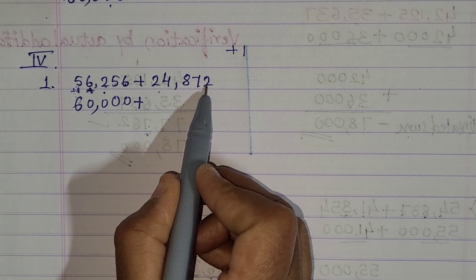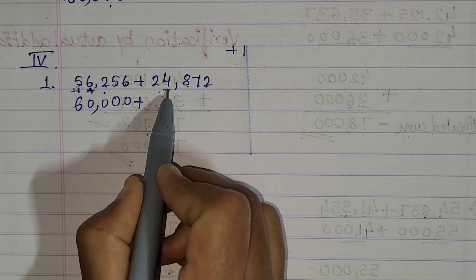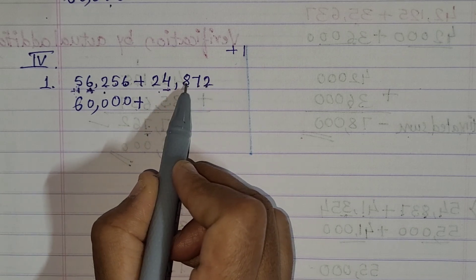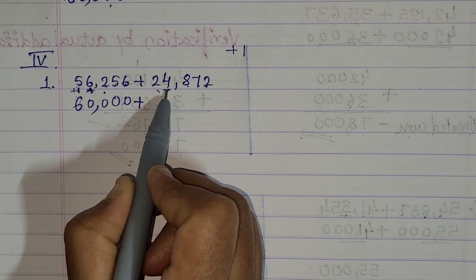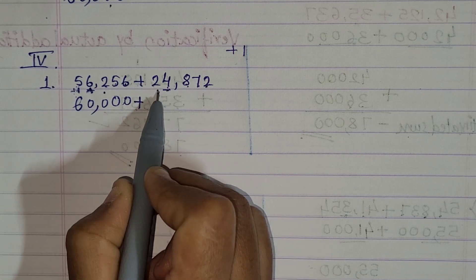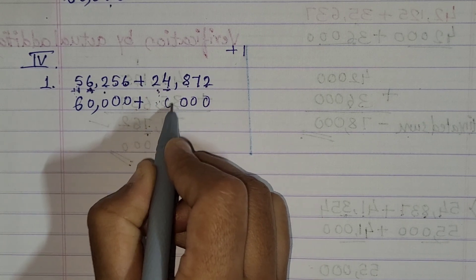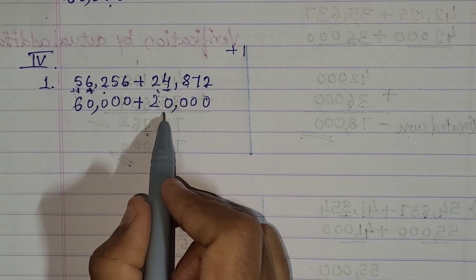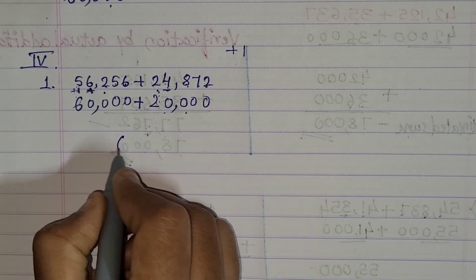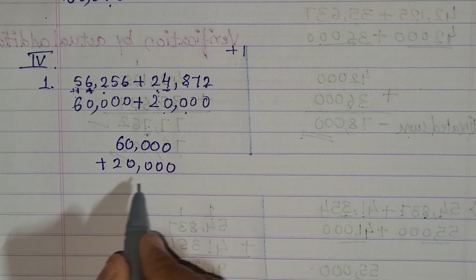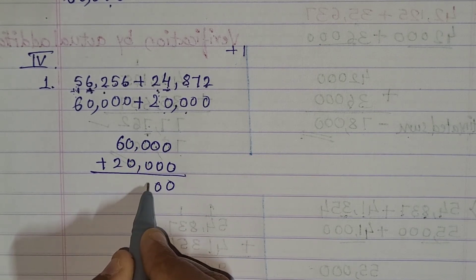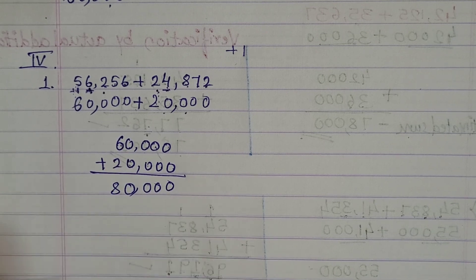Then for the next number, apply the same thing. You need to see the thousand place — if it is 1, 2, 3, or 4, replace unit, ten, hundred, and thousand by zero and keep the ten thousand digit unchanged. Here it is 4, so we keep that number unchanged: 0, 0, 0, 0 — so it is twenty thousand. Now let's add: sixty thousand plus twenty thousand. Zero, zero, zero, zero — comma — 6 plus 2 is 8, so the answer is eighty thousand.